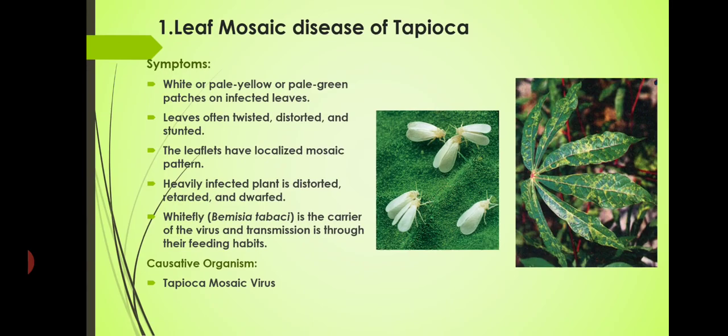The leaflets have a localized mosaic pattern; heavily infected plants are distorted — completely shriveled, dried up, retarded and dwarfed. One carrier organism is involved as it is a viral disease. The carrier organism is the white fly, that is Bemisia tabaci. This white fly is very small but white in color, and can be seen while walking through tapioca plantations. It is the carrier of the tapioca mosaic virus, and transmission is through their feeding habits — normally inhabiting on the leaves and while ingesting the tissue, it transmits the virus.